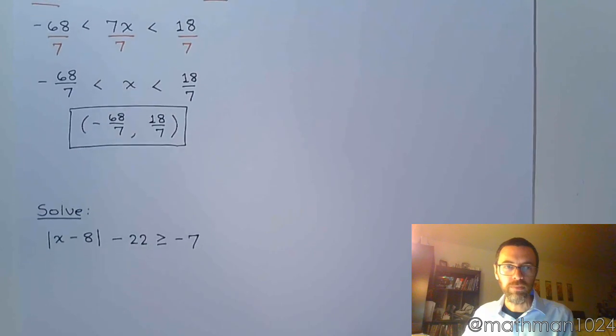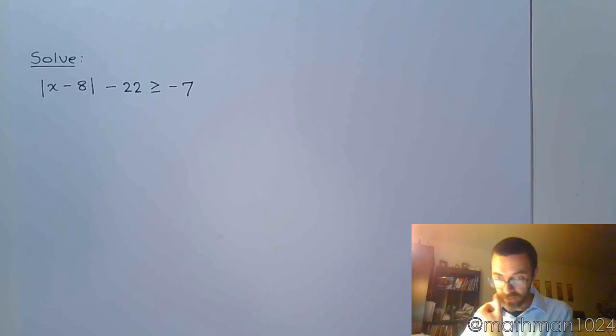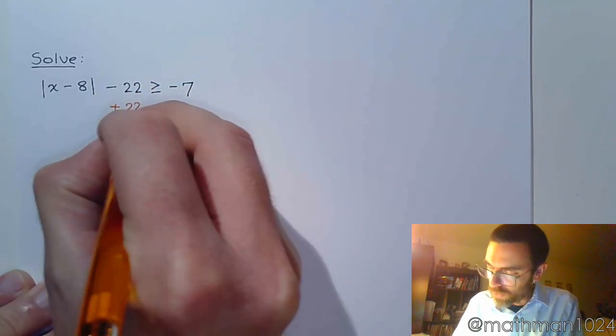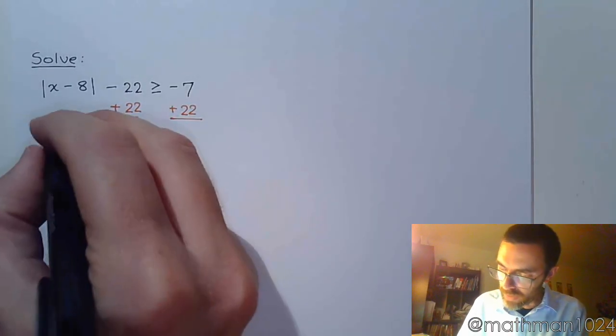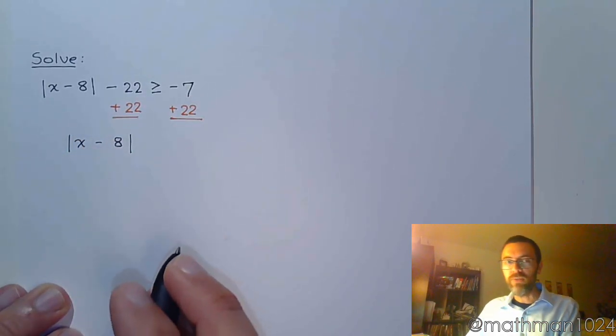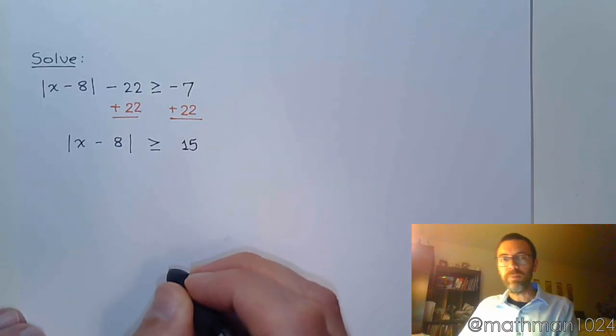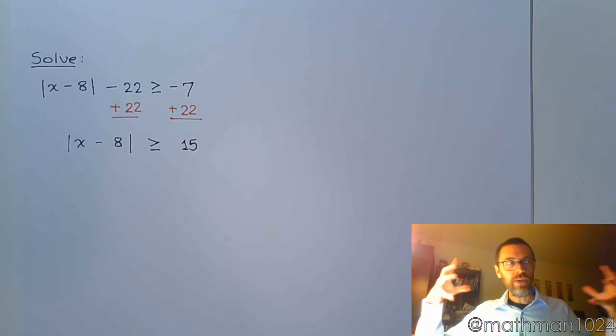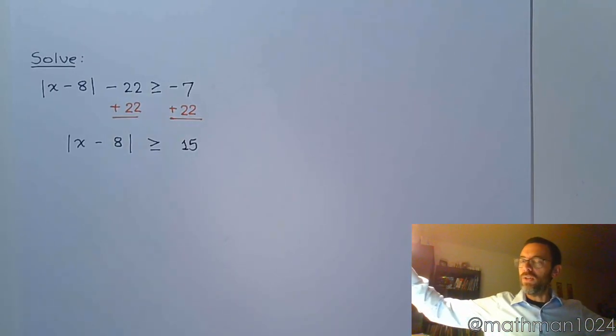Now for this next one, we have the absolute value of x minus 8 minus 22 is greater than or equal to negative 7. So you have to first get the absolute value by itself by adding 22 to both sides. Because before you do that, you can't really determine exactly where you're going to be looking for your solution set. So the absolute value of x minus 8 is greater than or equal to 15. And since this says the absolute value is greater than, we're talking about distance. Distance is greater than 15, which means you're not staying bounded, but you're pushing away. You can be greater than 15 one way or less than negative 15 on the other side.